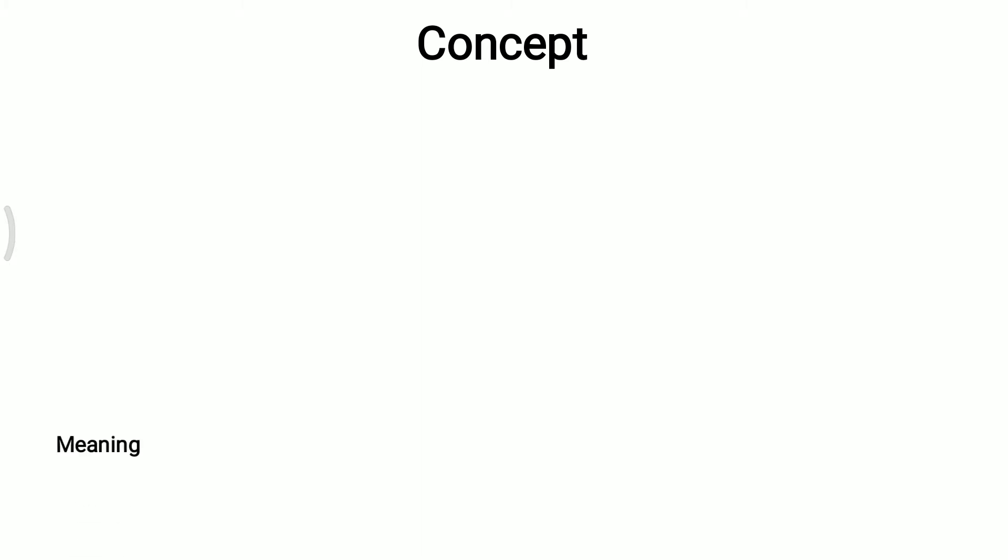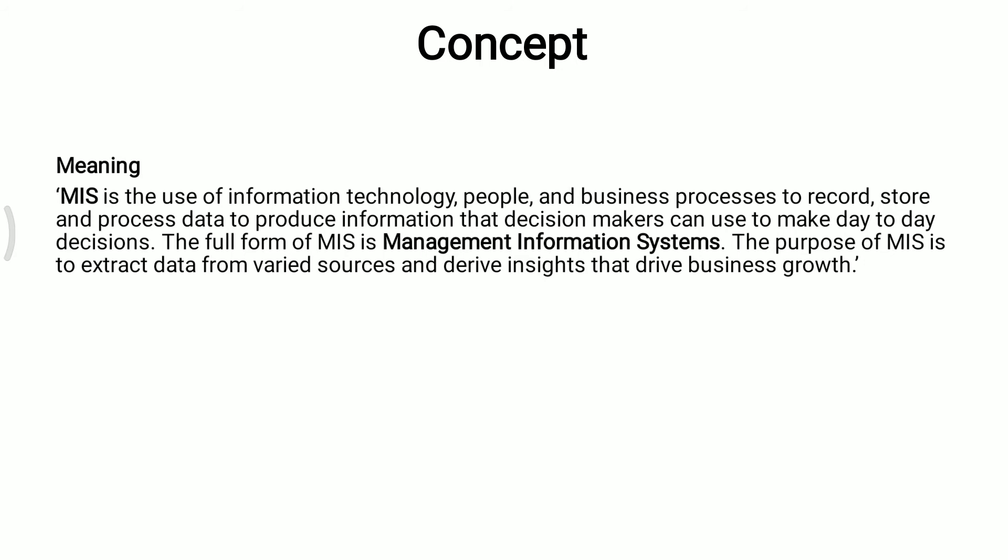First we will understand the concept of MIS — the meaning of MIS. MIS is the use of information technology, people, and business processes to record, store, and process data to produce information that decision makers can use to make day-to-day decisions. The full form of MIS is Management Information System. The purpose of MIS is to extract data from varied sources and derive insights that drive business growth.